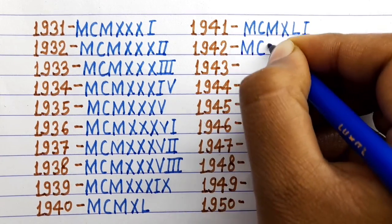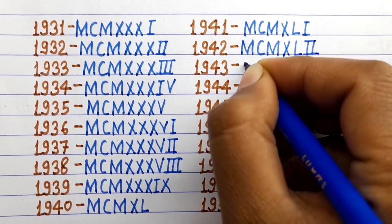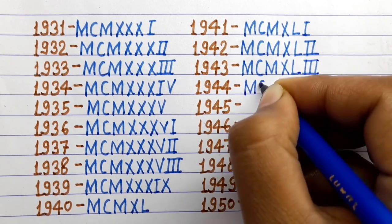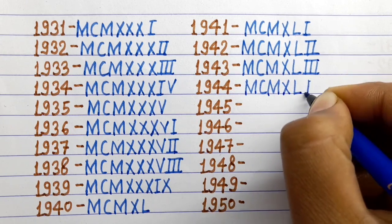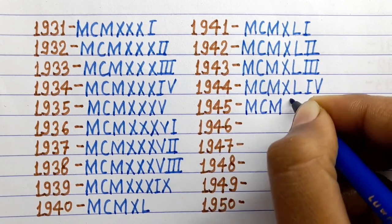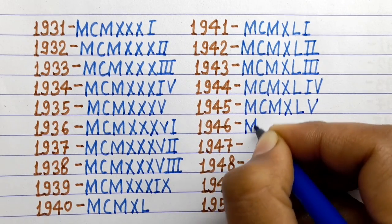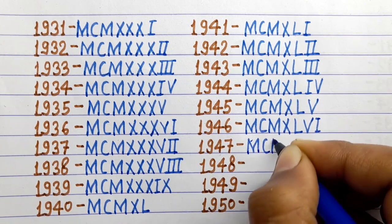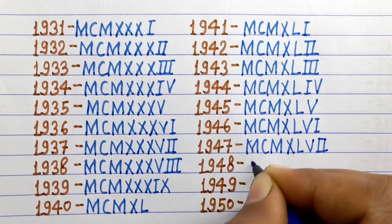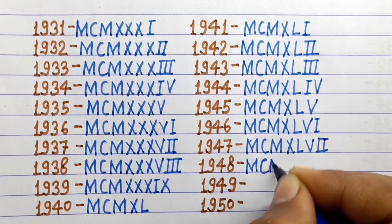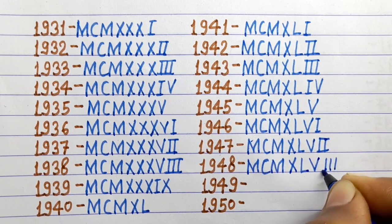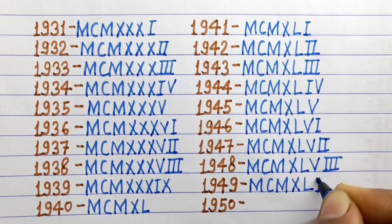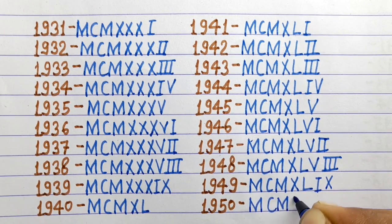1940 MCMXL, 1941 MCMXLI, 1942 MCMXLII, 1943 MCMXLIII, 1944 MCMXLIV, 1945 MCMXLV, 1946 MCMXLVI, 1949 MCMXLIX, 1950 MCML.